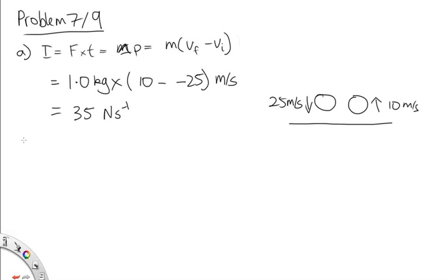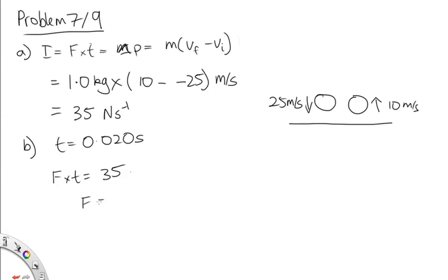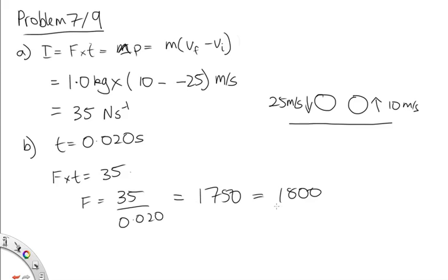Part B: if the ball is in contact for t = 0.020 seconds, what's the average force exerted on the floor? Using F × t = impulse = 35, the force equals 35 divided by 0.020 = 1,750 N. To three significant figures we write this as 1,800 N.